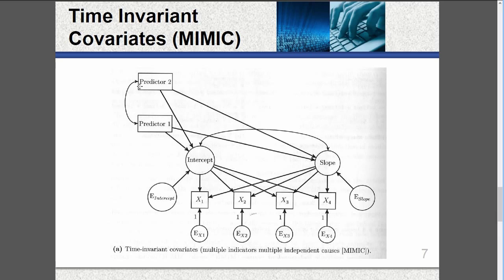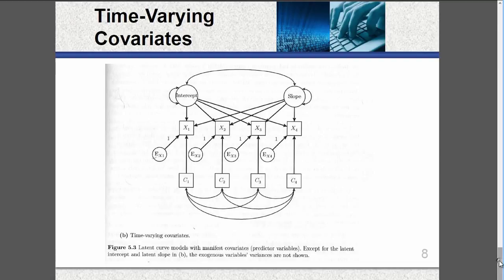And then, of course, if you have two covariance, you can measure the covariance between them as well. This is time invariant. Note, you can explicitly still model the covariance between the latent intercept and the latent slope.